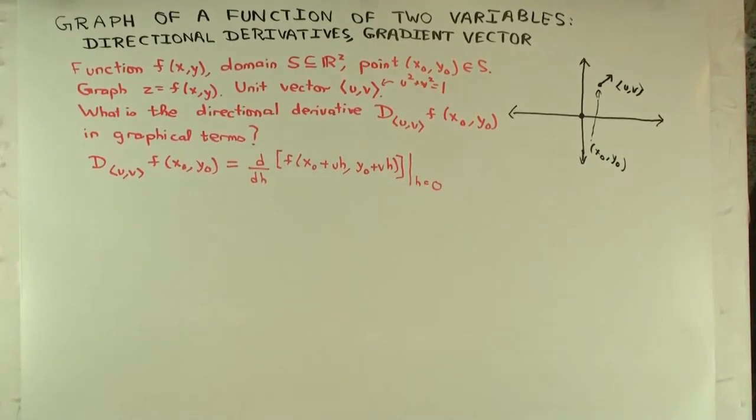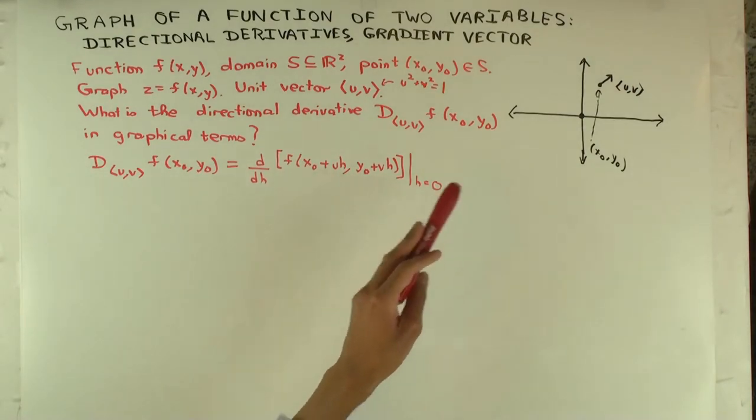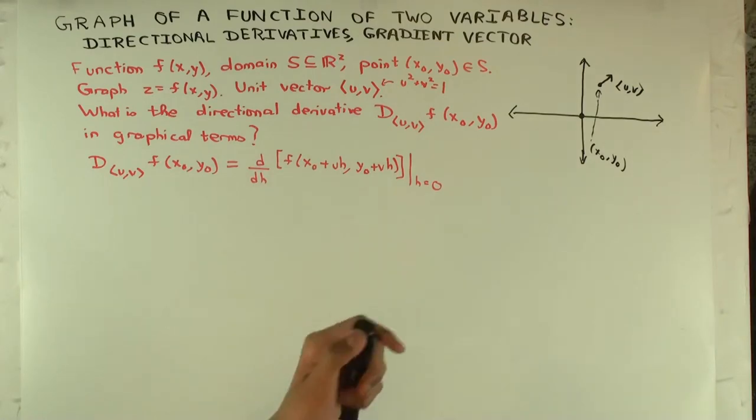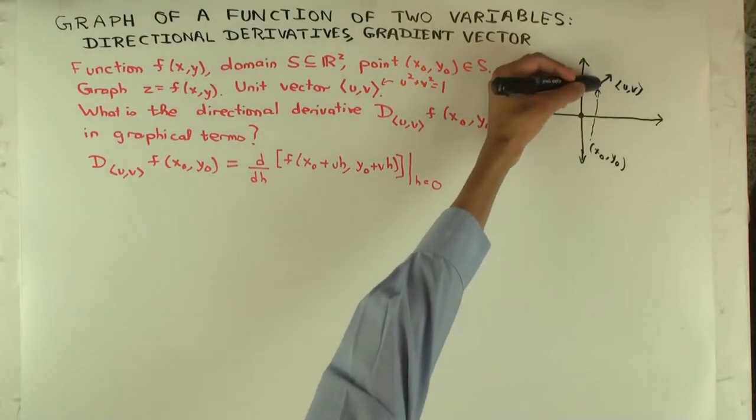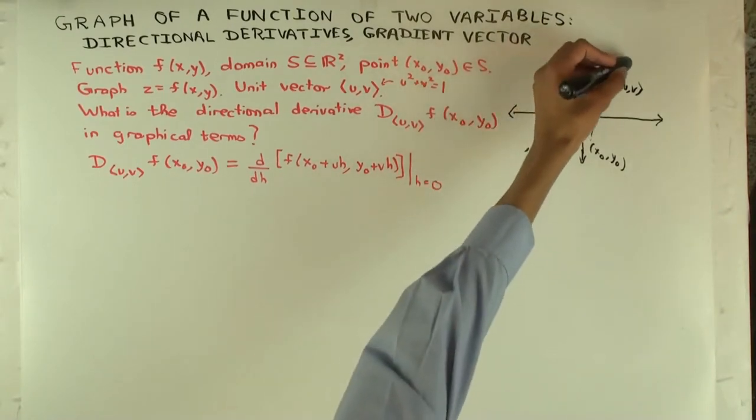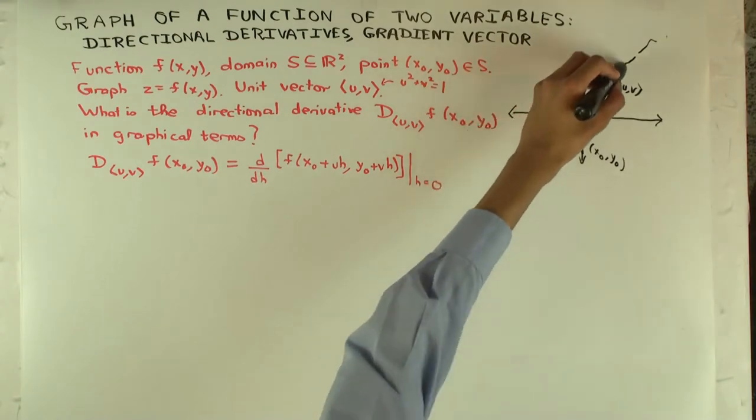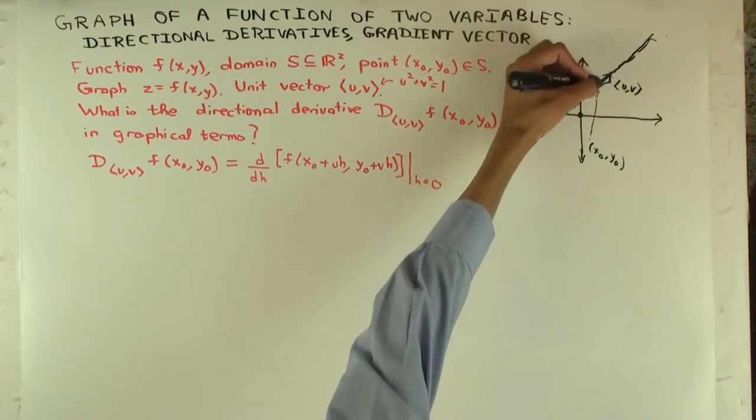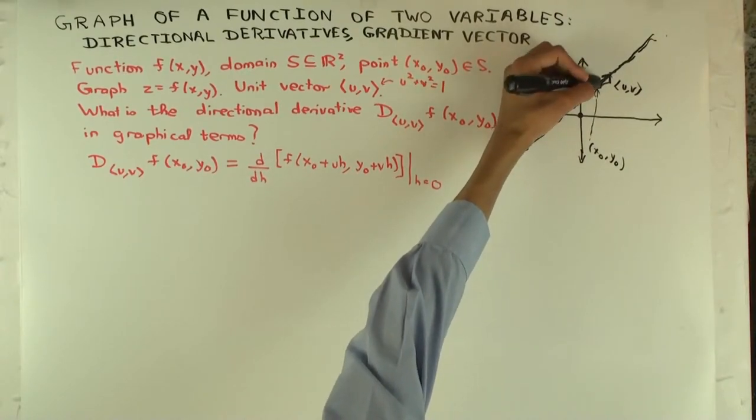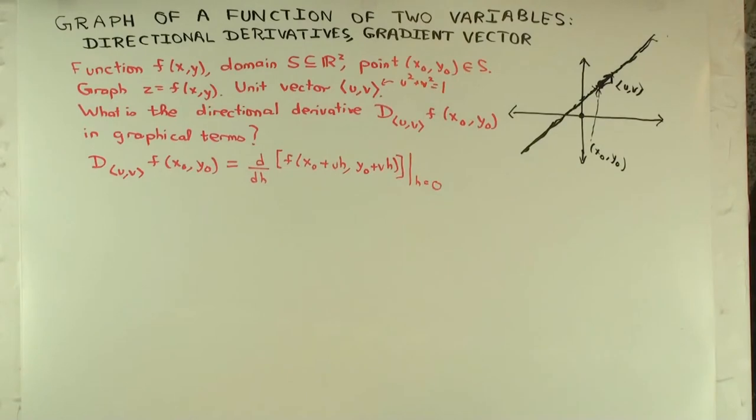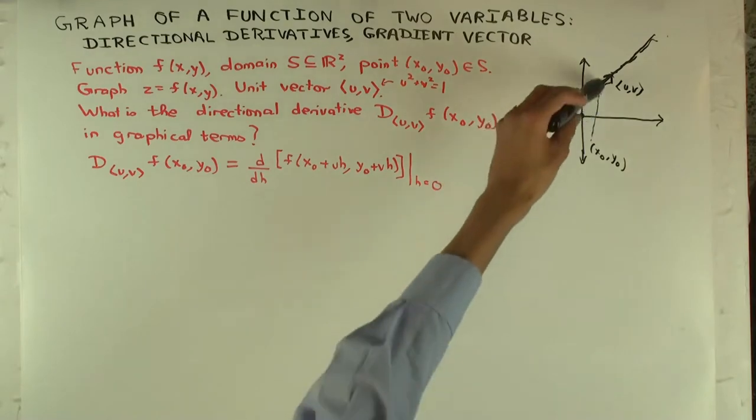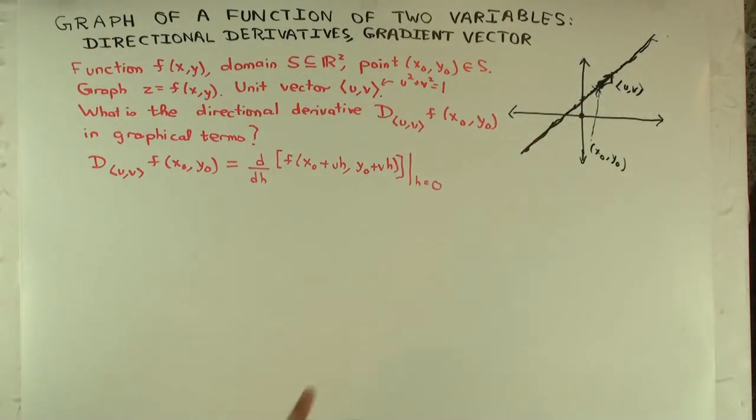So just the derivative of this function, which is saying you are moving a little bit in the direction of the vector (u,v). So you are considering the function restricted to... if this vector is (u,v) and this point is (x₀, y₀), you're actually considering the function along this line. The unit vector is just this much, the point is here, and you are considering the function restricted to that line. And then you are saying what's the derivative at zero, which just means the derivative at the point. So this unit vector (u,v) is telling you how to scale your line.